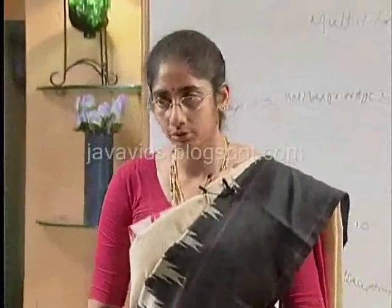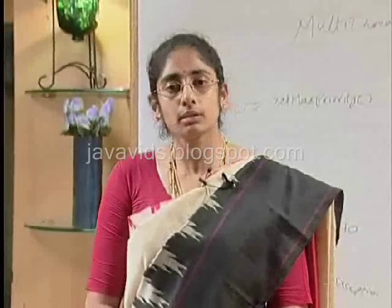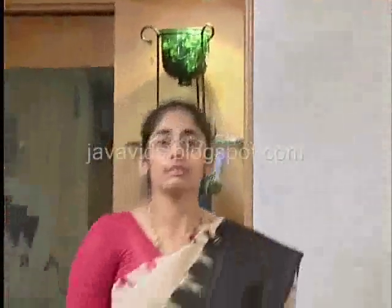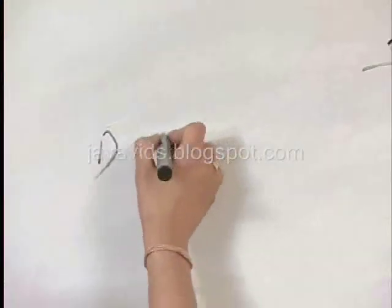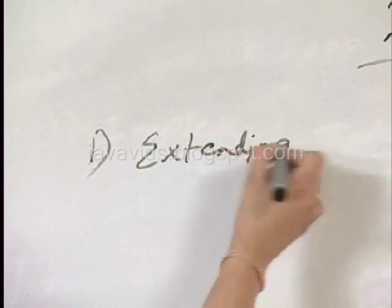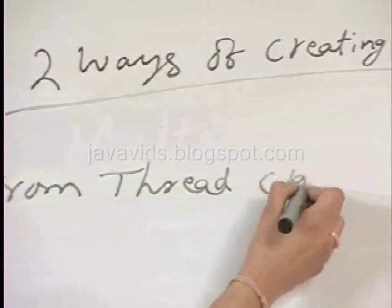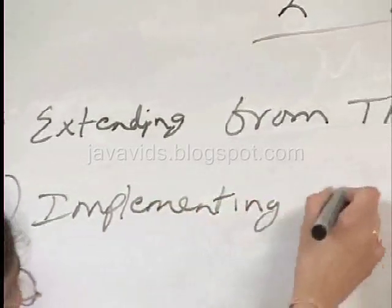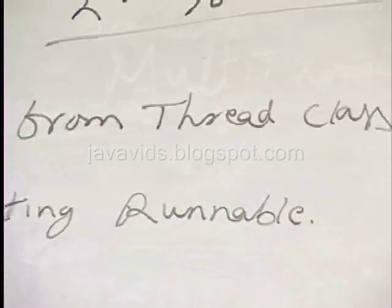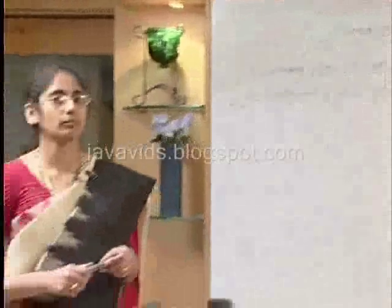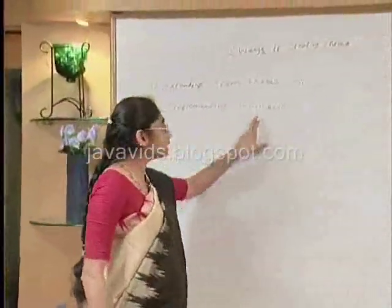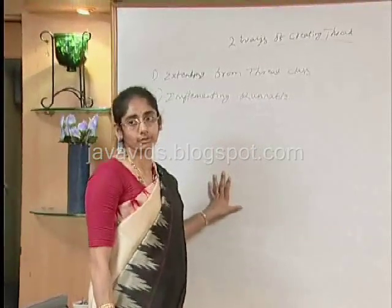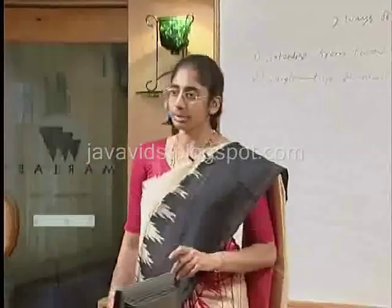Now that we have seen how threads work and what properties they have, let us look at the different ways of creating a thread. There are two ways of creating a thread: one is extending from the Thread class and two is implementing the Runnable interface. You can select either method. Let us look at the steps to executing both methods and see what the difference is. After that, we will take a look at an example using each of these methods.